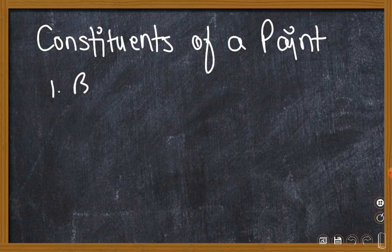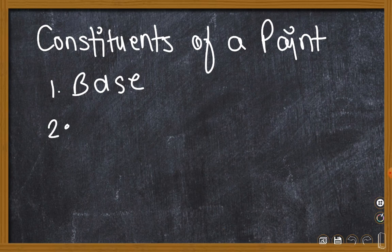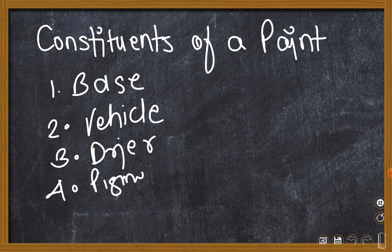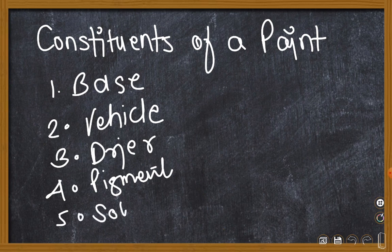First one is base. Second is vehicle. Third constituent is dryer. Then comes the pigment. And finally, we have our solvent.